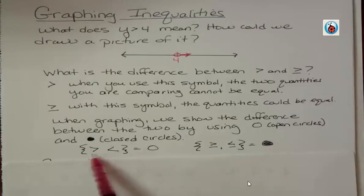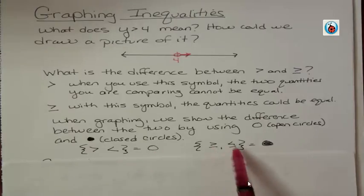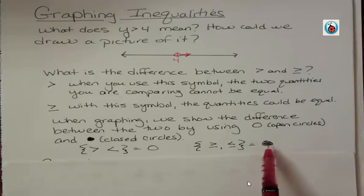Notice that when we have no equal to part, there's less to our circle and there's less to our symbols. We don't bother to shade it. When there's more to our symbols, there's more to our thing. That is, we add the shading. That's a good way to remember it.